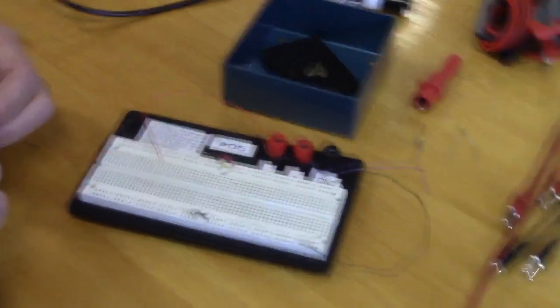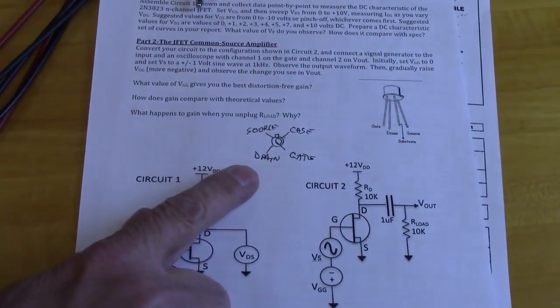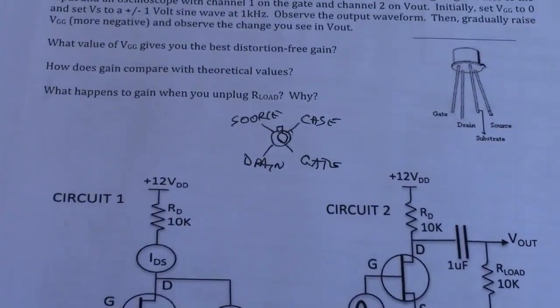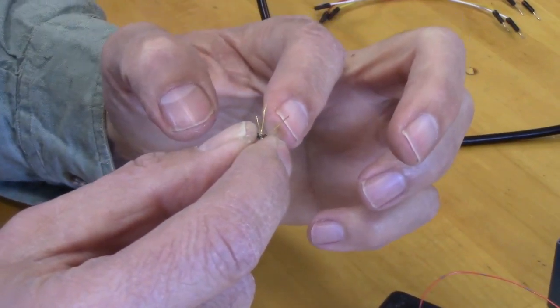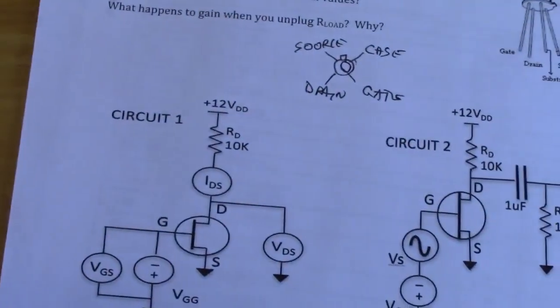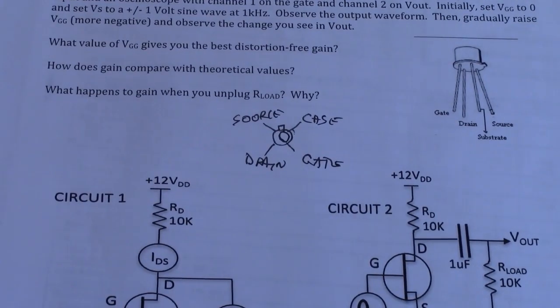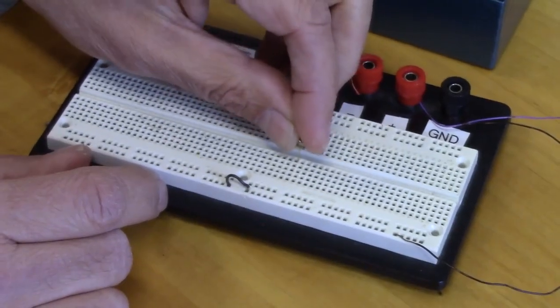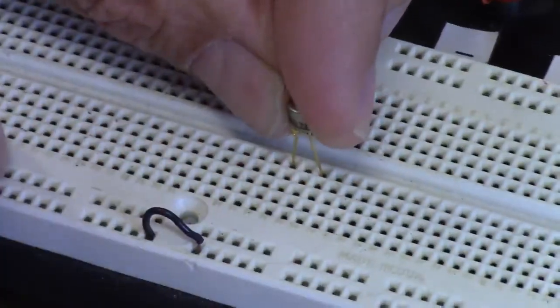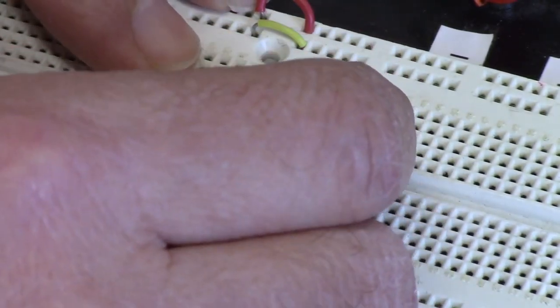The pinout for this transistor is given on the data sheet, but I drew a little diagram here. This is the top view — looking down from the top with the little tab sticking up and going around clockwise, you get case, which is always tied to source, then gate, then drain, and then source. So the two wires on either end of the tab both go to ground. I'm going to orient the transistor on the board with the tab pointing down so those two leads on the downward side connect to the ground bus, and then on the top side we'll have drain and gate.